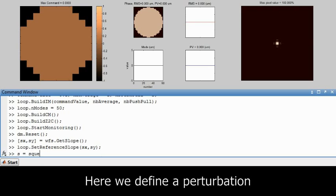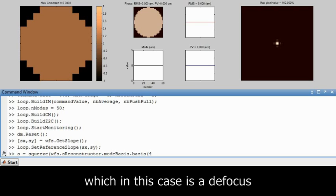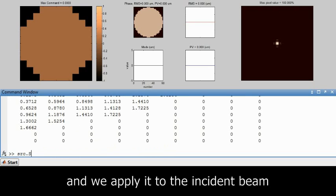Next we define a perturbation, which is in this case a defocus, and we apply this to the incident beam.